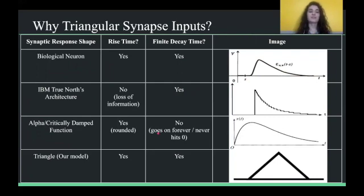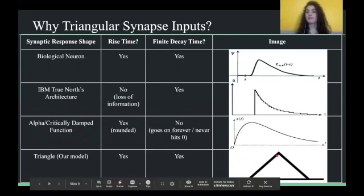The next two I've added just for references. IBM made a neuromorphic chip a while back that used this type of spike shape, where it just shoots right up. So, there is no rise time in this, and there's kind of a step function down, so it would have a finite decay time. But that, having no rise time, there's a loss of information there. Another possible model is the alpha function, which is a little more rounded, like the biological neuron. However, it only converges to zero and never hits zero, which will cause some computational issues, if not addressed.